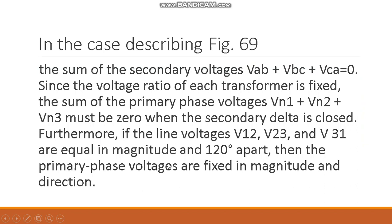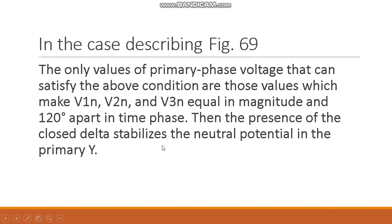If the line voltages V1, V2, and V3 are equal in magnitude and 120 degrees apart, then the primary voltages are fixed in magnitude and direction. The values of primary phase voltage that can satisfy the above condition are those which make V1N, V2N, and V3N equal in magnitude and 120 degrees apart in time phase. Then the presence of the closed delta stabilizes the neutral potential in the primary Y.